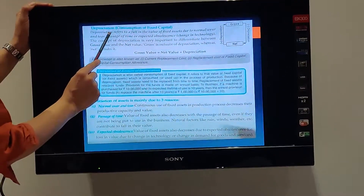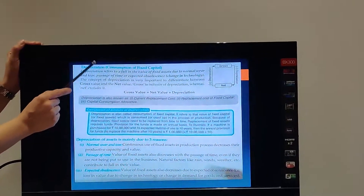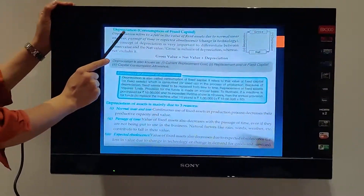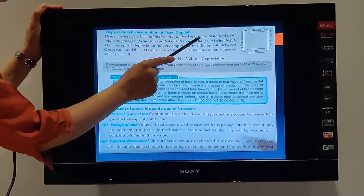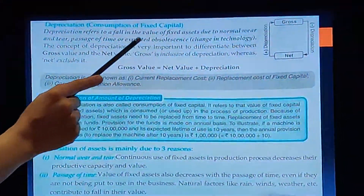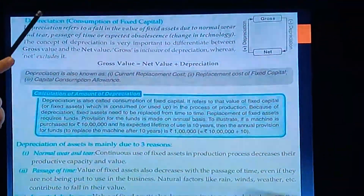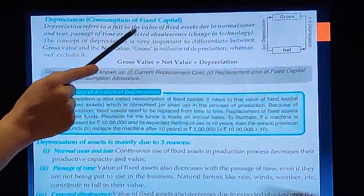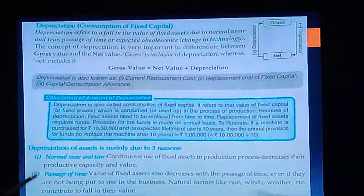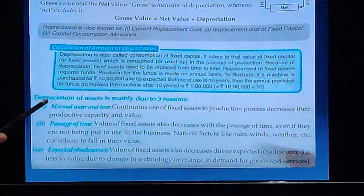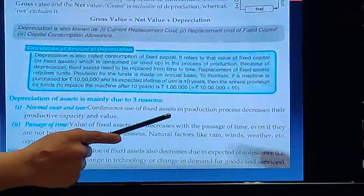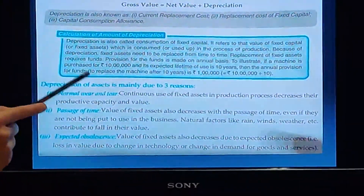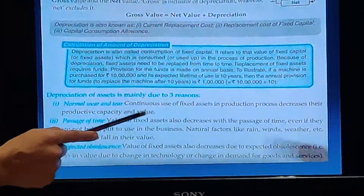What is Depreciation? You are 11th standard students who have studied the depreciation chapter. Depreciation is the fall in value of fixed assets. Why does the value of fixed assets fall? There are three reasons. Reason number one: Normal wear and tear. When you use the asset, normal wear and tear reduces its productive capacity and value.